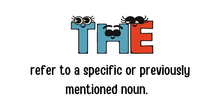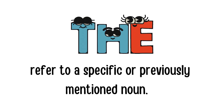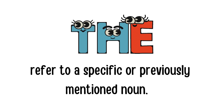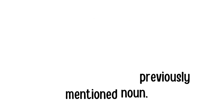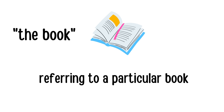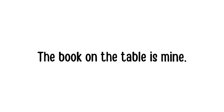Now let's move on to the, which is used to refer to a specific or previously mentioned noun. For example, if I say the book, I am referring to a particular book that we have previously mentioned or is known to both the speaker and listener. For example, the book on the table is mine.